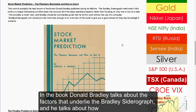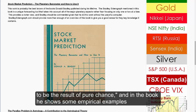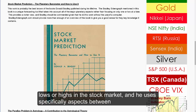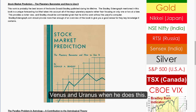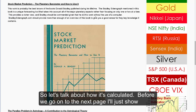In the book, Donald Bradley talks about the factors that underlie the Bradley Siderograph, and he talks about how there's an undeniable truth that business fluctuations seem too highly correlative with astrological factors to be the result of pure chance. In the book he shows some empirical examples of how certain astrological aspects are associated with either lows or highs in the stock market. He uses specifically aspects between Venus and Uranus when he does this, and he was very precise in the way that he calculates it.